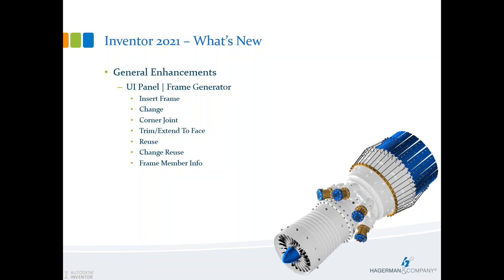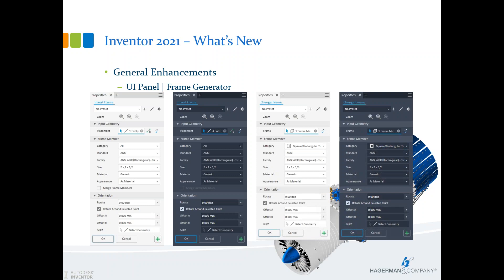The frame generator also received updates — these commands have moved to the panel architecture: insert frame, change, corner joint, trim, extend to face, frame member info, reuse, and change reuse — all in light and dark theme. Inside the frame generator environment, most new UI panels include new zoom commands so you can zoom directly to the selected member or geometry edge. The orientation triad that used to be in the dialog box is now on-screen where you can select top corner, center, or inside, and offset manipulators let you drag directly on screen.